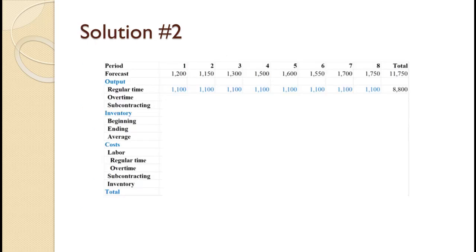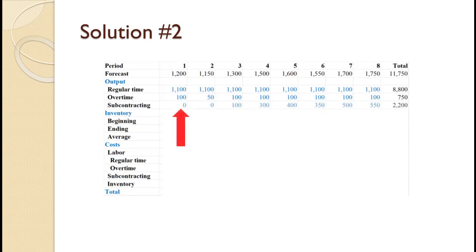The maximum regular time capacity is 1,100 per period. Demand exceeds that quantity in every period, so we schedule 1,100 each period for a total regular time production of 8,800. In period 2, we need 1,150 and have regular time production of 1,100, so we need overtime of 1,150 minus 1,100 equals 50. That is less than the capacity limit of 100, so we schedule 50. For the other 7 periods, we need 1,200 or more, so we schedule the maximum overtime production of 100 in each of these periods. For period 1, we need 1,200 and produce that many in regular time and overtime, so no subcontracting is required. Likewise, in period 2, the full 1,150 required is produced without subcontracting. For the remaining periods, the 1,200 we can produce in regular time and overtime is not adequate, so subcontracting will be required.